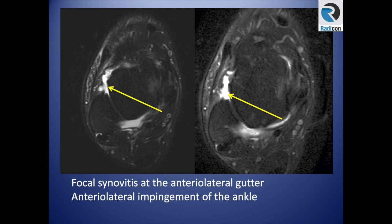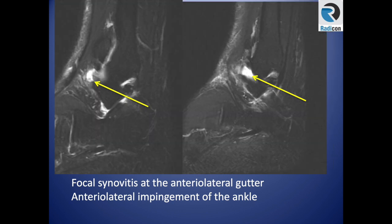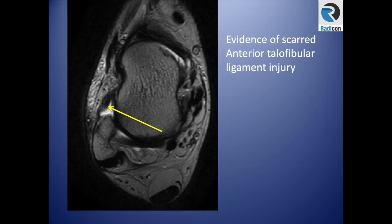One might note these images look similar to an acute injury. History is very important to distinguish between the two — with acute injury you typically also see lots of subcutaneous edema. This is how it appears in sagittal images. In another patient, you can see a small amount of fluid with a thickened anterior talofibular ligament, again indicating impingement.